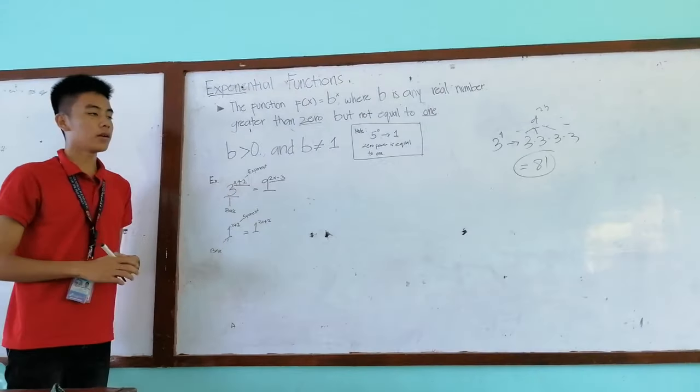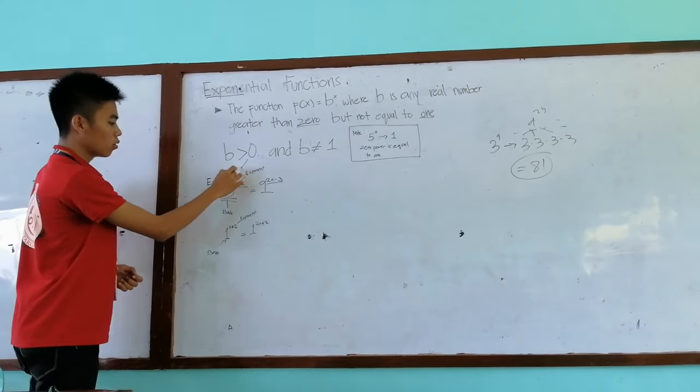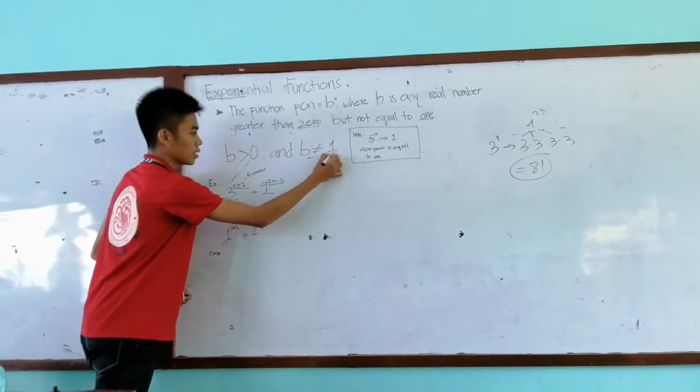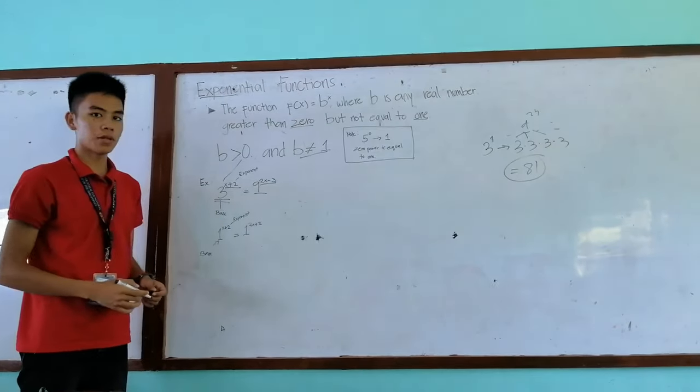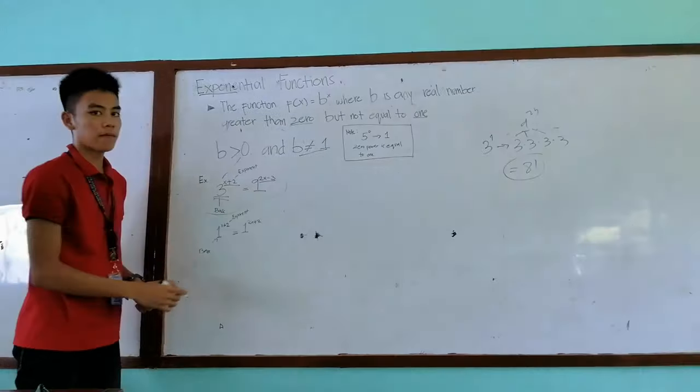As what the rule said, our base should be greater than 0 and 3 is greater than 0 as we all know and not equal to 1. 3 is also greater than 1. So our base is right and our exponent is also correct. So this can be considered as an example of exponential function.